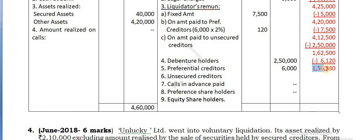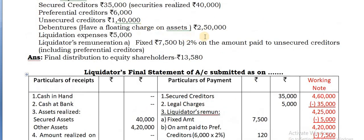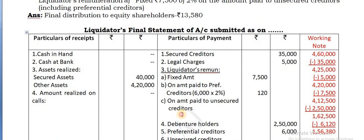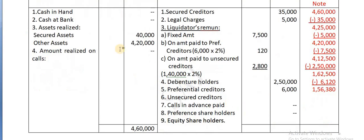Since cash available is more than the claim, take the claim amount itself - 1,40,000. So take 1,40,000 itself. 1,40,000 into 2% directly, which gives you 2,800.